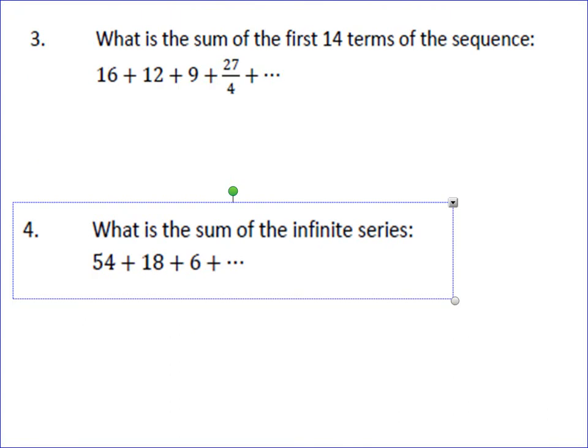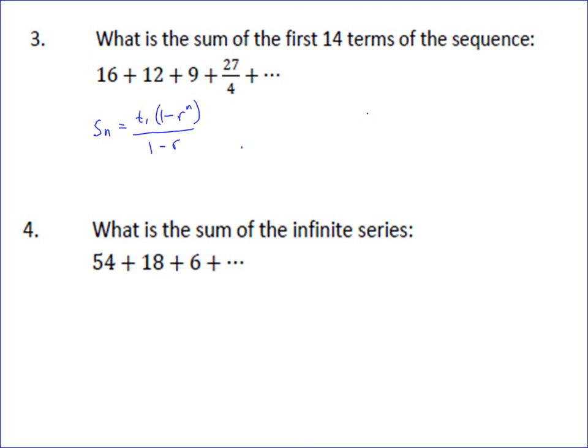Alright, the next is to find the sum of the first 14 terms in this sequence. And so we need to remember what our geometric formula is. Our geometric formula says the sum of a certain number of terms is always going to be equal to the first term times 1 minus the ratio to the n all over 1 minus the ratio.